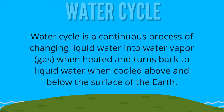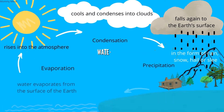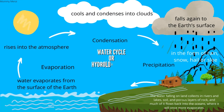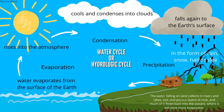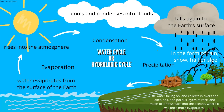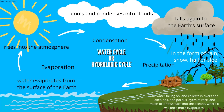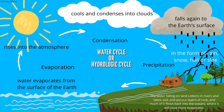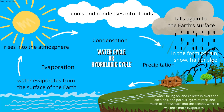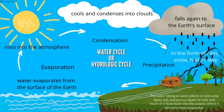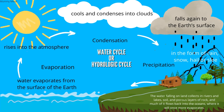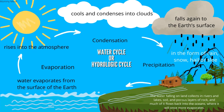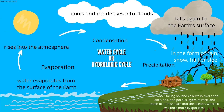As you can see in this video, the water from our sea, rivers, and other forms evaporates from the surface of the Earth. Through the process of evaporation, it then rises into the atmosphere and cools and condenses into clouds through the process of condensation.